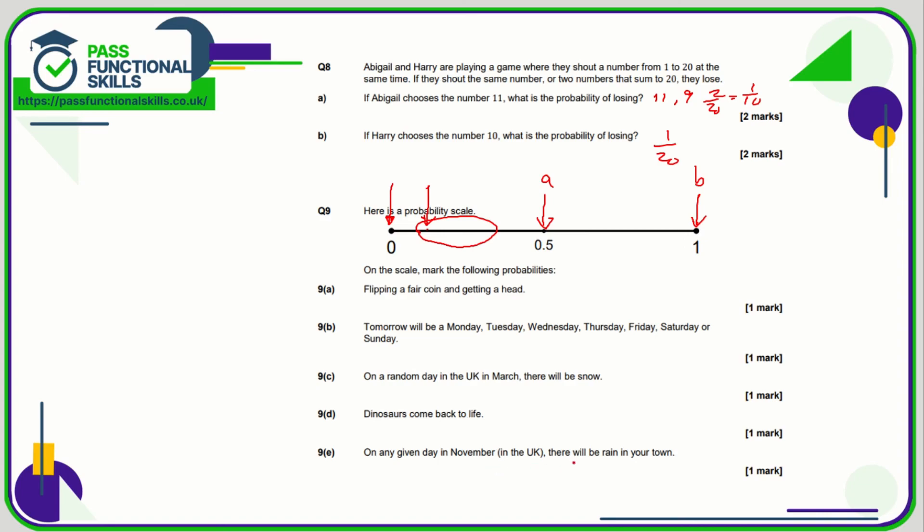And on any given day in November there will be rain in your town. Well, I'd say that's not 100% certain, but it's pretty close. So I would say put it tight to the one as you feel is acceptable. It's definitely much closer to one than it would be to 0.5, that's for sure.